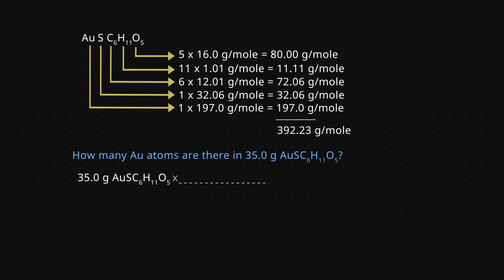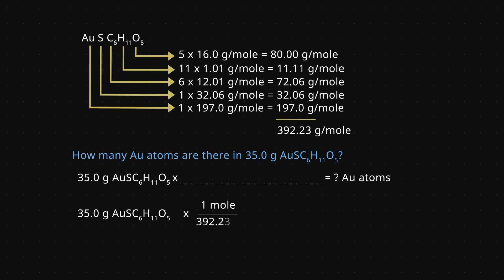Starting with 35 grams of aurothioglucose, we can convert this mass to moles by multiplying by one mole over 392.23 grams. The grams in the denominator of the molar mass cancel the grams of 35, giving us the moles of aurothioglucose. We can then use Avogadro's number to convert the moles of aurothioglucose to its number of molecules by multiplying by 6.022 times 10 to the 23rd molecules over one mole. The moles cancel out, leaving us with the molecules of aurothioglucose.